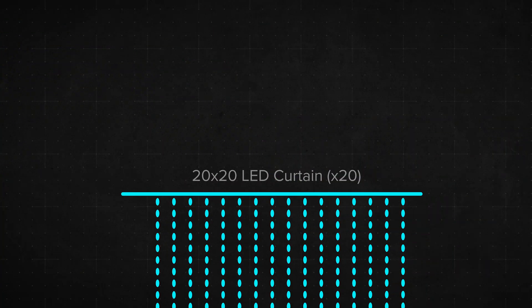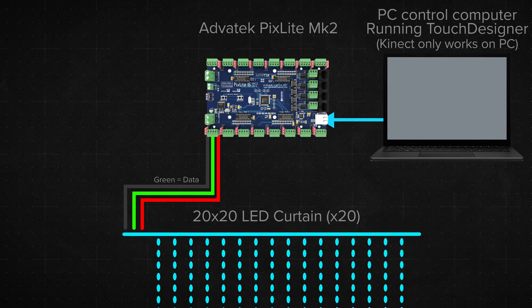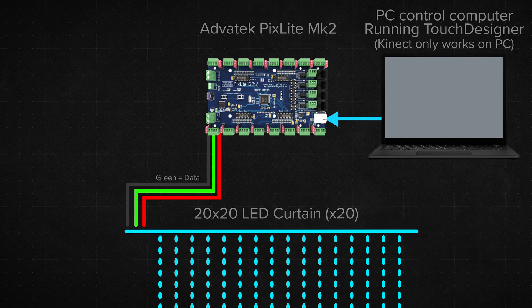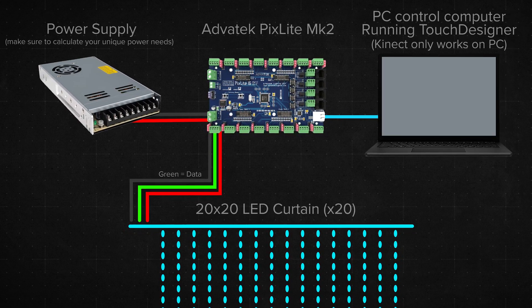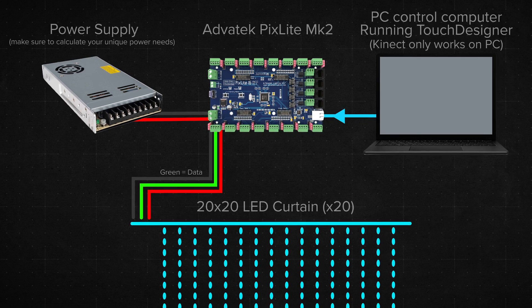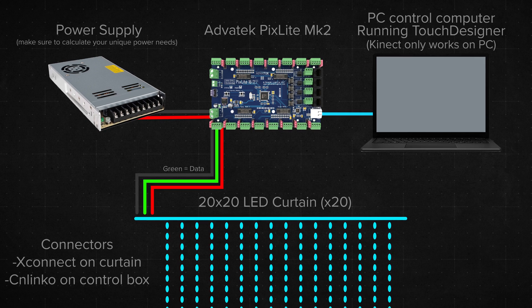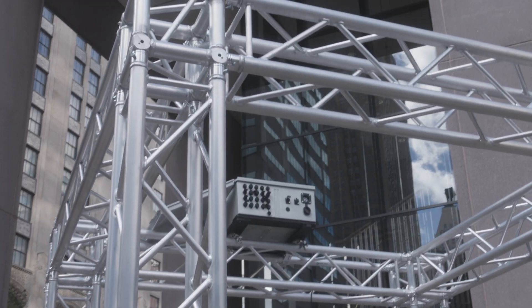We have 20 LED curtains to power and control. Each LED curtain has an input connector that carries our data and power connections. We need a pixel control board to take data from our computer and send the proper signal to our LEDs. This board connects to our computer via ethernet. We also have our power supplies that power the board and the pixels. Power and data go through weatherproof connectors at the curtain, and this is all sealed in an electrical box that sits above the display.